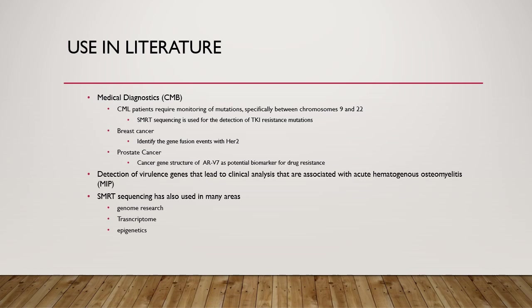Ardui's paper gives examples of SMRT sequencing for medical diagnostics, specifically cancer. Treatment of cancer patients requires close monitoring of mutations that lead to proliferation of cancer cells. Chronic myeloid leukemia is caused by the translocation between chromosomes 9 and 22. CML is usually treated with tyrosine kinase inhibitors; however, point mutations lead to drug resistance. SMRT sequencing allows for the detection of TKI-resistant mutations. In breast cancer, whole genome and transcriptome SMRT sequencing has been applied to cell models to identify gene fusion events with HER2. In microbiology, SMRT sequencing was used to detect the impact of Staphylococcus aureus genomic variation on clinical phenotypes of children with AHO by Collins et al.